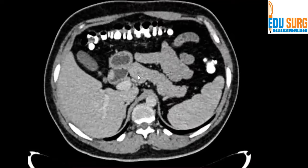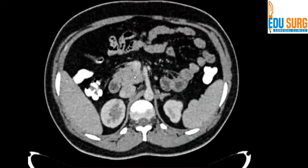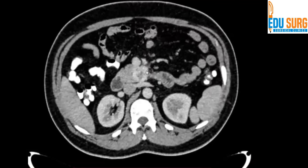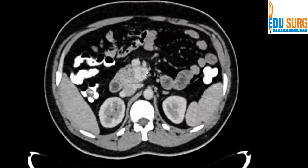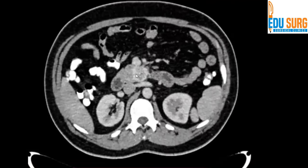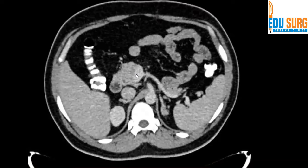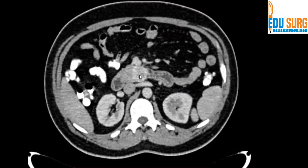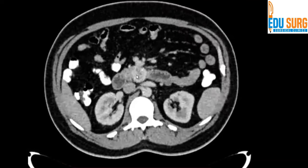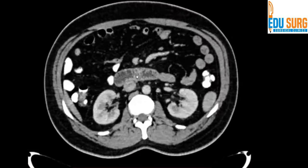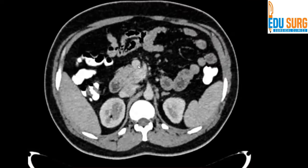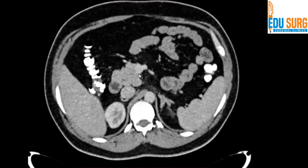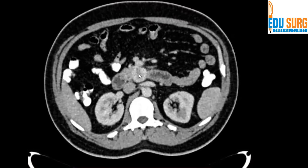This scan is very important because it was initially reported as an uncinate mass. Now if you label this as an uncinate mass, the differentials are only two: an uncinate neuroendocrine neoplasm, or a metastasis to the pancreatic uncinate process — and hypervascular metastasis to the pancreas are usually from kidney. This patient had no history of RCC. So this hyperenhancing or hypervascular lesion could be an uncinate neuroendocrine neoplasm — lighting like a light bulb — or it is a lymph node.